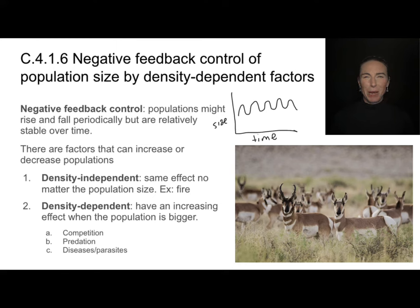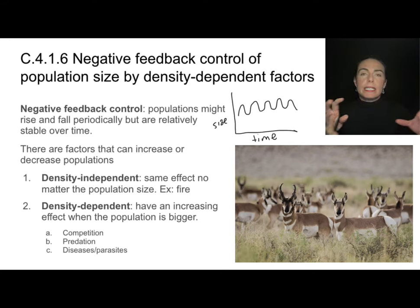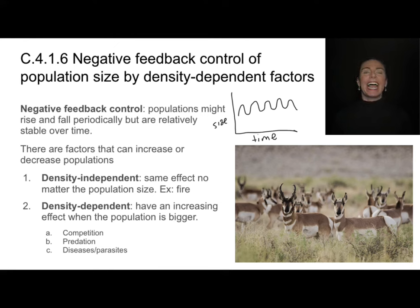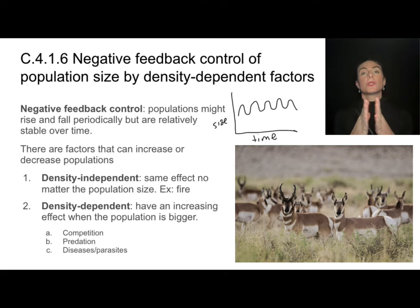There are a few different things that can affect population size. Some are density-independent, meaning they have the same effect regardless of population size — for example, a fire might kill many organisms whether the population is dense or sparse. However, some factors are density-dependent, meaning they have a bigger effect as the population grows. Competition is more fierce in a larger population, predation is easier, and diseases and parasites more readily infect hosts when organisms are living more closely together.